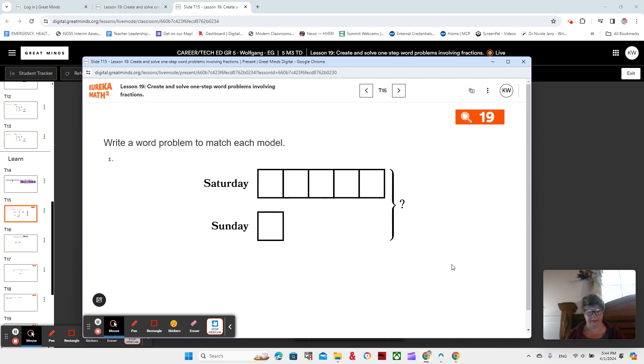So what do we notice about these tape diagrams? There's two of them, so this is maybe something a little bit different, two tape diagrams. We see that this one is Saturday, and it has one, two, three, four, five pieces. And this one is Sunday, and it only has one piece. But these pieces are the same size, so this is going to be the same amount. And then this part shows that we're putting Saturday and Sunday together.